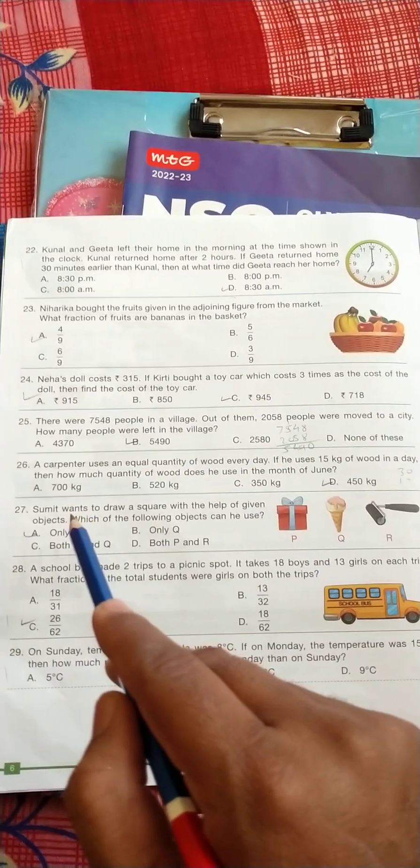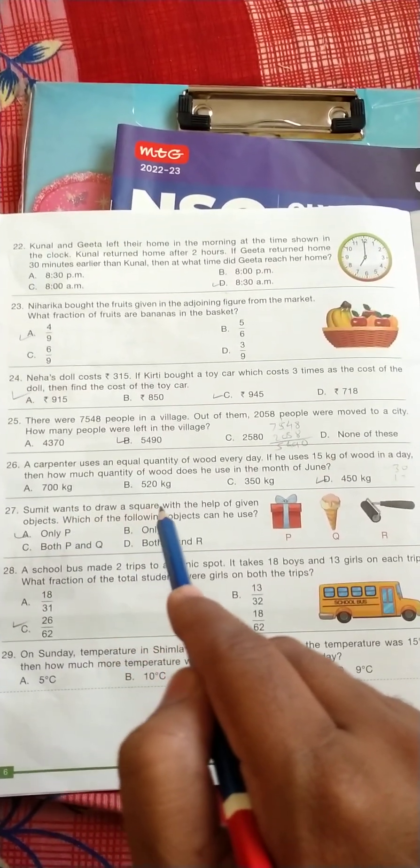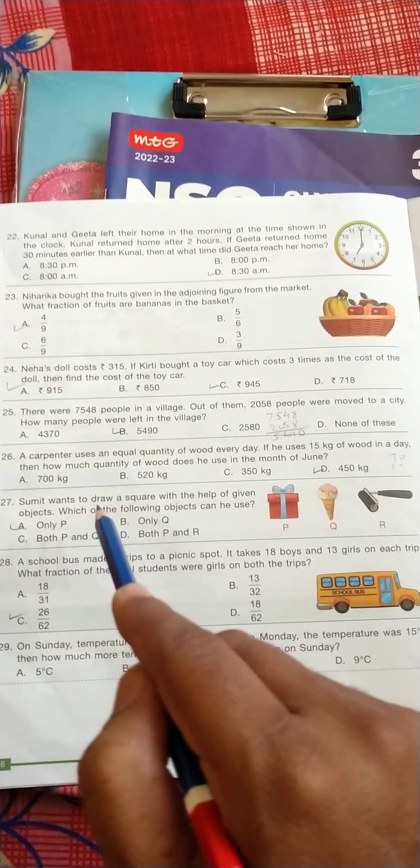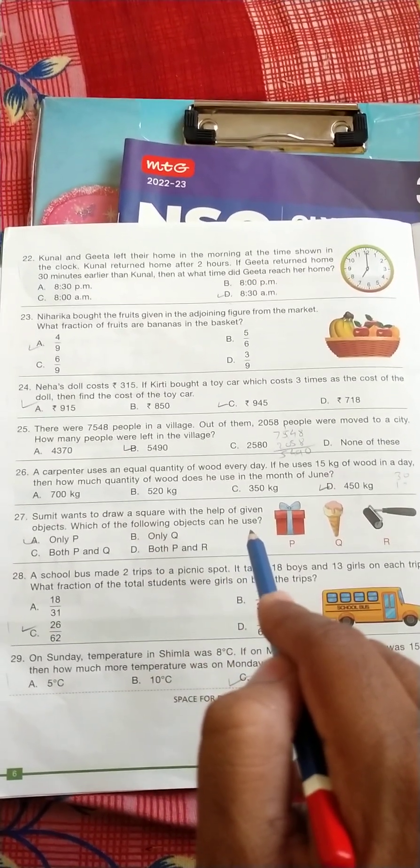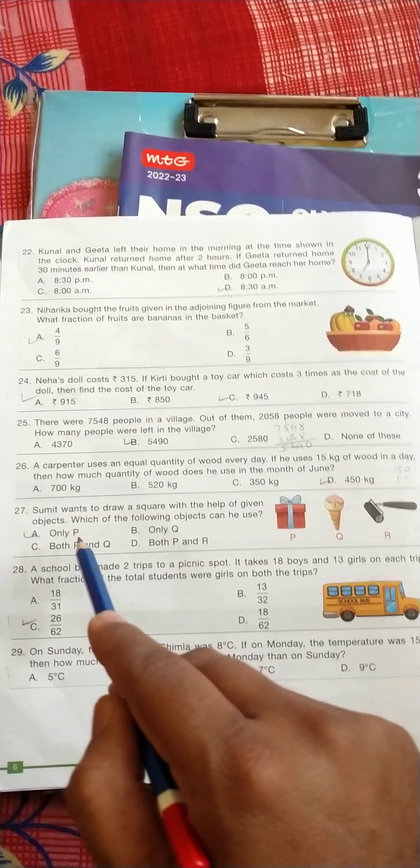Question number 27: Sumit wants to draw a square with the help of the given object. Which of the following object can be used? So the correct answer is only P.